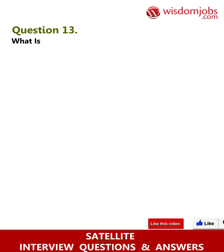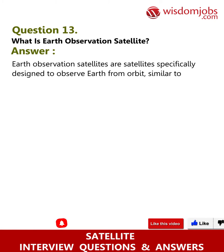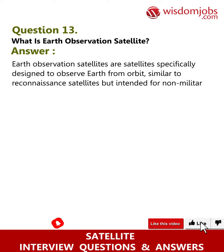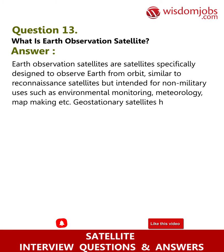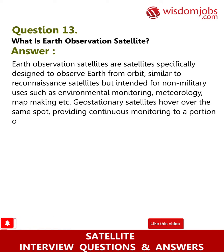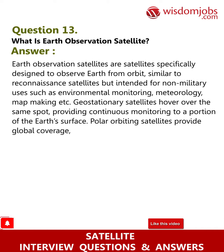Question 13: What is an Earth observation satellite? Answer: Earth observation satellites are satellites specifically designed to observe Earth from orbit, similar to reconnaissance satellites but intended for non-military uses such as environmental monitoring, meteorology, and map-making. Geostationary satellites hover over the same spot providing continuous monitoring to a portion of the Earth's surface. Polar-orbiting satellites provide global coverage but only twice per day at any given spot.